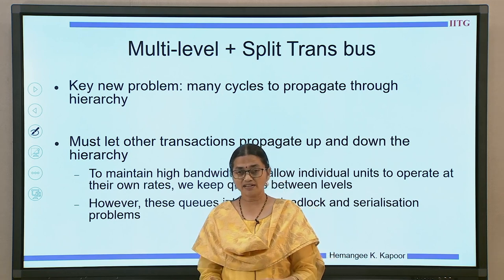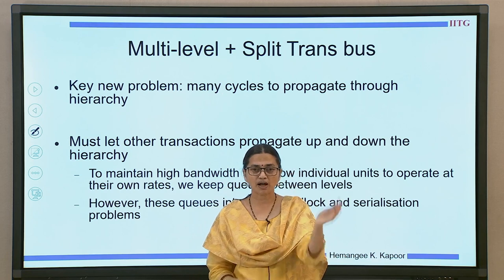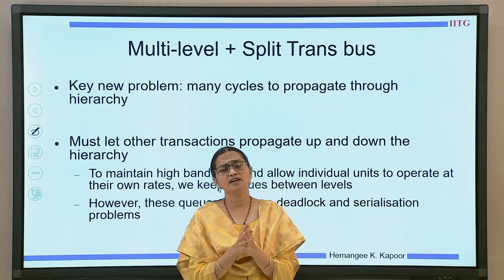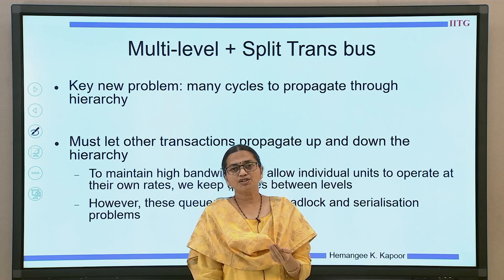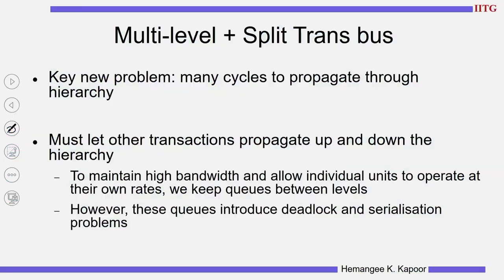The correctness aspects and how do we allow multiple outstanding requests - all of these need to be handled. We need to take care of deadlock, write serialization, and many other aspects because the invalidations will take a lot of time to happen. While handling this, we have to make sure that we still need good bandwidth because multiple requests can be processed simultaneously. Individual processor nodes are going to take their own time to process because of the hierarchy and other pending work, and therefore there will be many queues, and when there are queues, deadlock and serialization issues need to be handled.